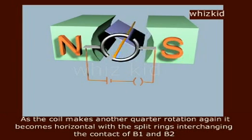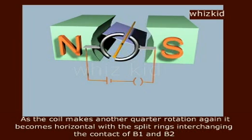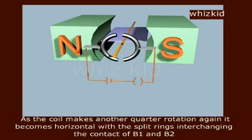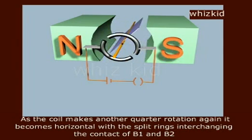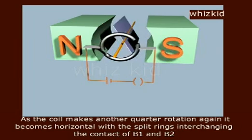As the coil makes another quarter rotation, again it becomes horizontal with the split rings interchanging the contact of B1 and B2.